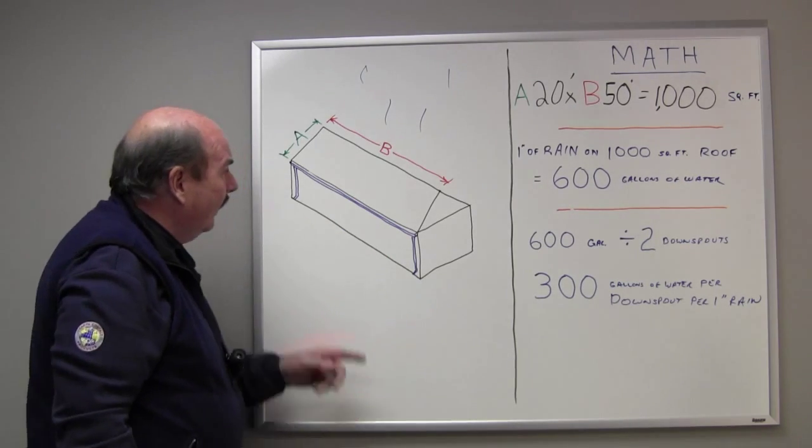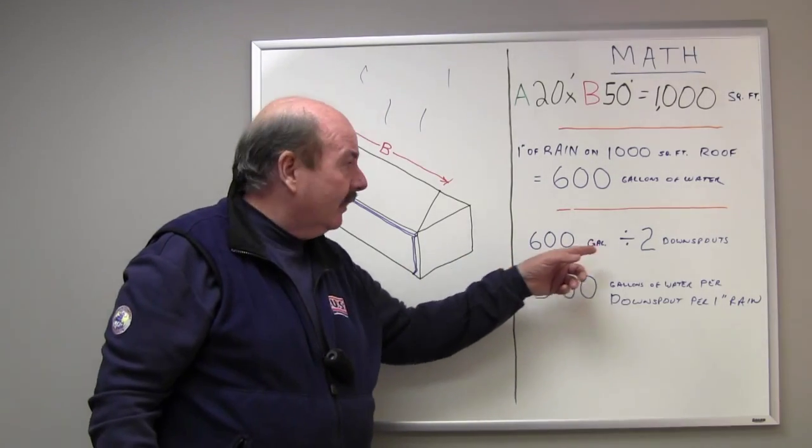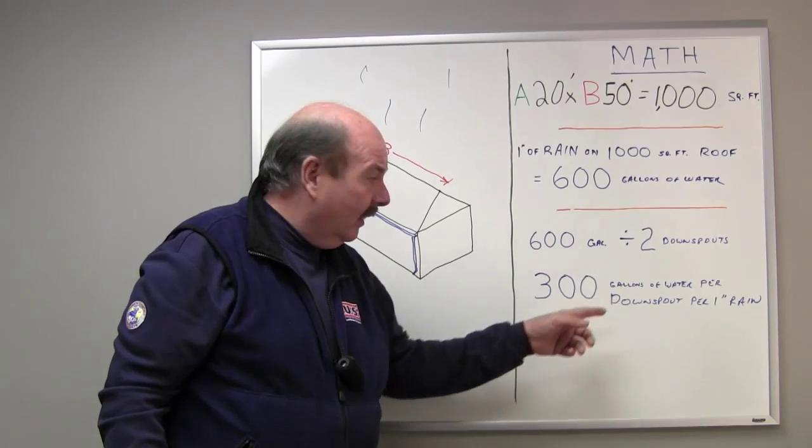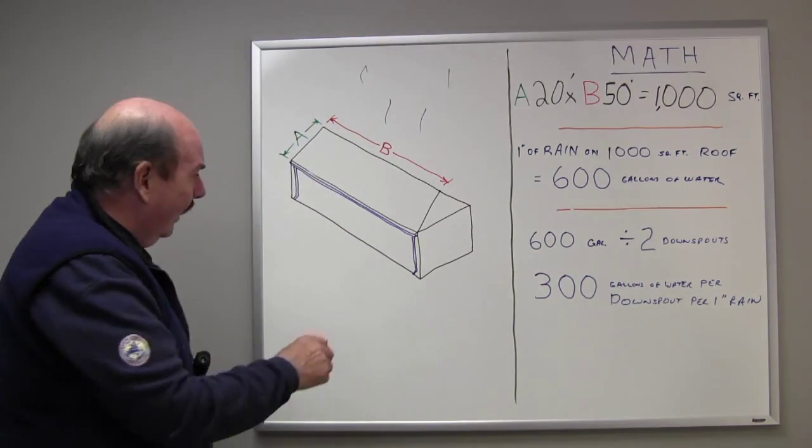Now let's look at the guttering system. We have a gutter with two downspouts. Take that 600 gallons, divide by two downspouts, that's 300 gallons of water at each downspout when it rains.